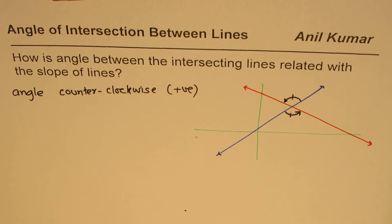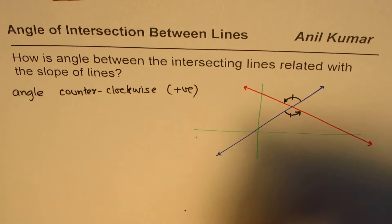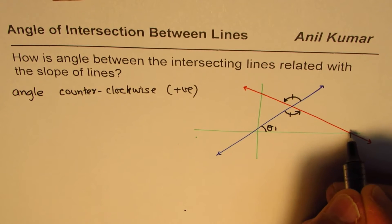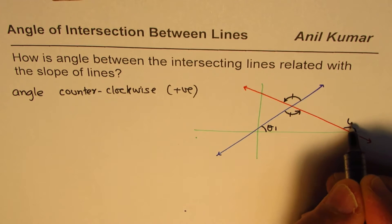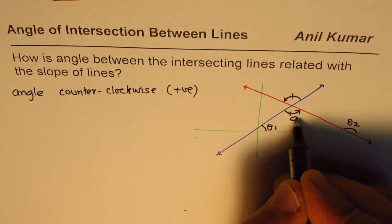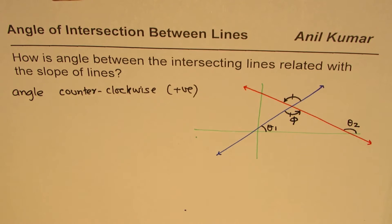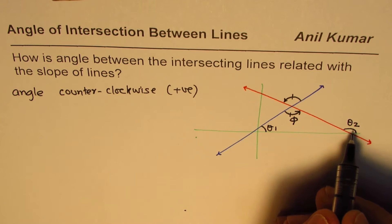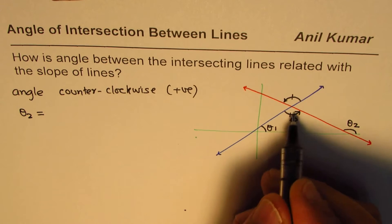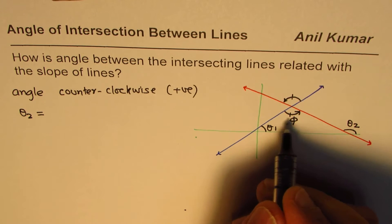So let us derive a formula. Let us say that this angle is theta 1 and the other angle over here is theta 2. Now from external angle theorem we know theta 2 should be equal to sum of two remote interior angles.